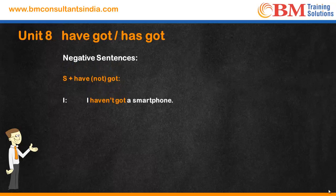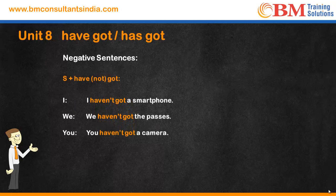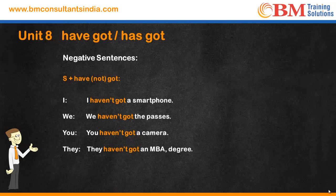Let's look at negative sentences now. With I, we, you, they, the structure is subject plus 'haven't got.' You can say: 'I haven't got a smartphone,' 'We haven't got the passes,' 'You haven't got a camera.' They don't have an MBA degree — 'They haven't got an MBA degree.'